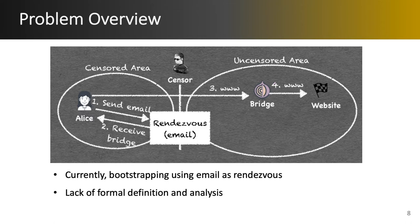Currently one way to get this information, which we call the bootstrapping information, is through email. Alice sends an email to the Tor project and she will receive information such as the IP, port, and public key of the bridge. Now having this bootstrapping information, Alice can connect to the bridge and from the bridge to the destination website. The connection to the bridge by Alice is possible because the censor does not get this information about the bridge, which otherwise would be blocked as well.